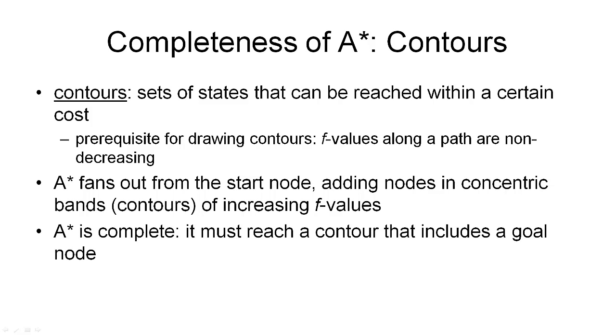A prerequisite for being able to draw contours is that the F values along a path are non-decreasing. So what this means is that as we move away from the initial state, the F values are usually increasing. Now, the way A star works, fundamentally, is that it starts from the initial state and then adds nodes according to these contours. It always starts with a smaller set and then increases the F value as it goes along. But it will always explore nodes with lower F values before it moves to a higher plateau, so to speak.